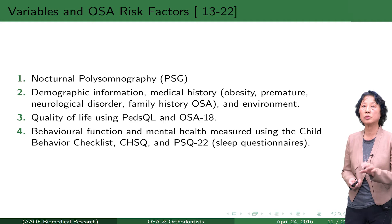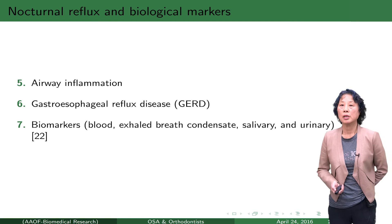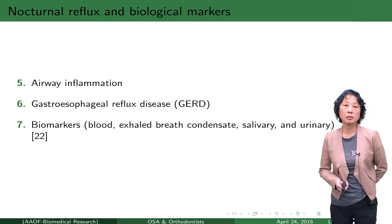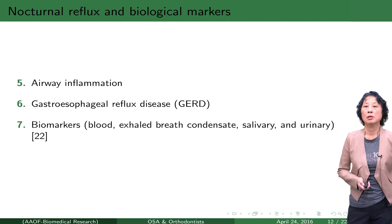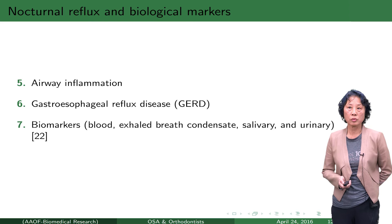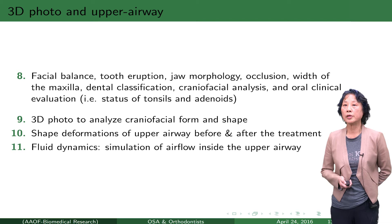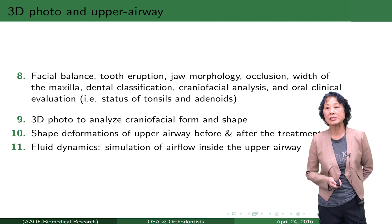What about airway inflammation — how do you even measure it? What about GERD? Also, a recent scoping review paper by Gozal and colleagues looked at many papers examining biomedical markers like blood markers, saliva markers, or urinary markers that could possibly be used for OSA diagnosis. Also, dentists and orthodontists regularly look at facial balance, tooth eruptions, craniofacial index analysis, and oral clinical evaluations.